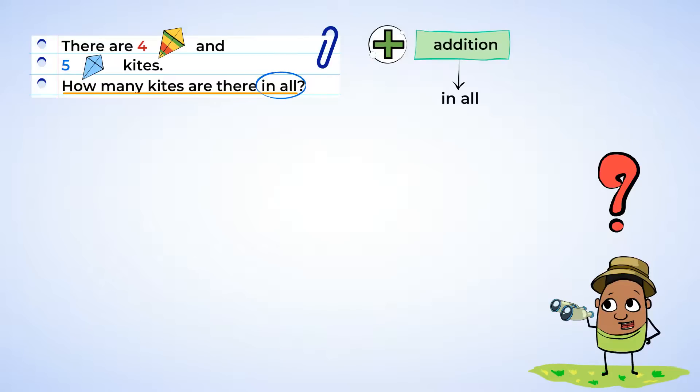Okay, now let's draw the picture. Will said he saw four striped kites. So let's draw four kites. They don't need to be perfect. This is just to help us add. Will also said he saw five dotted kites. Let's draw five more kites.